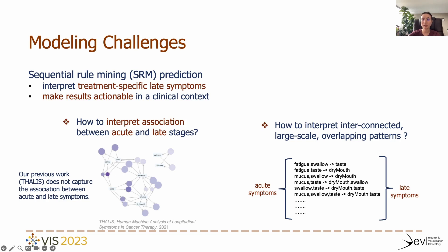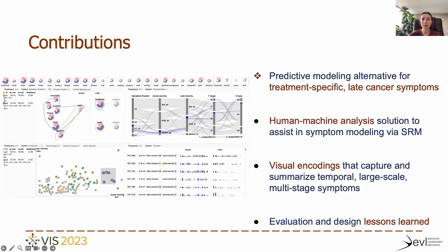However, it also outputs many repetitive interconnected patterns that are hard to interpret to understand treatment-specific late symptoms and associations between acute and late symptoms. Nonetheless, the results need to be actionable in a clinical context, so complementary analytics tools are needed. Our contributions include a modeling alternative for predicting late symptoms based on prior symptoms, a human-machine analysis solution to assist in symptom modeling using sequential mining, and a design of scalable custom visual encodings that capture different sampling rates in large-scale multivariate temporal symptom data.